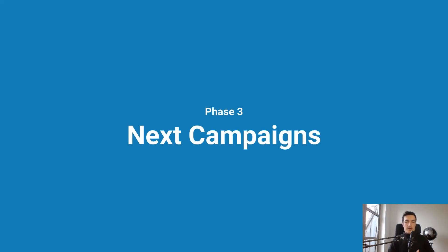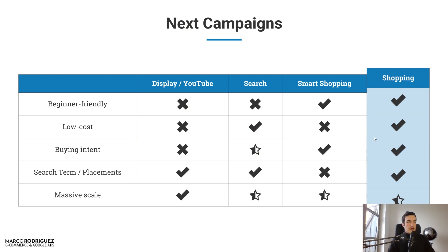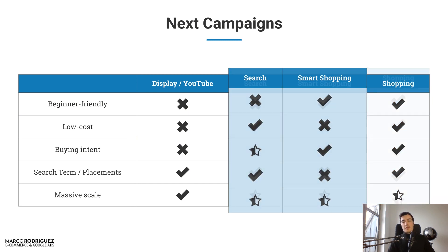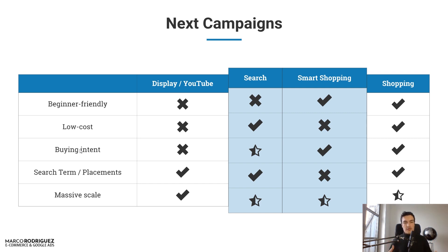Now you have shopping running. The next campaign should be either smart shopping or search. Forget about display for now unless you're spending around $500 per day. Shopping and search alone can get you to crazy amounts of sales — 100k, 200k, 300k, 400k per month or more. I have multiple clients where we go beyond those numbers with only search and shopping. But the question is: search or smart shopping — and which to use depends on several factors.